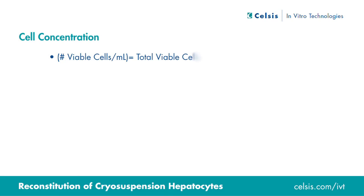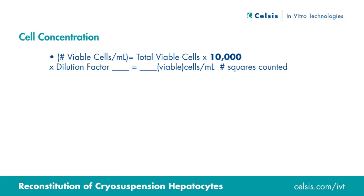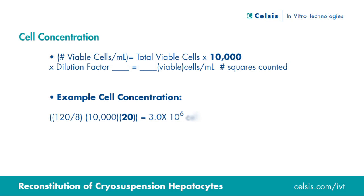The cell concentration is calculated by taking the total number of viable cells and dividing by the total number of squares counted. This number is multiplied by 10,000, which represents the hemocytometer chamber conversion factor for the volume in one quadrant — 0.1 microliters. This number is then multiplied by the cell dilution factor, 20. The results will provide the total number of viable cells per milliliter.